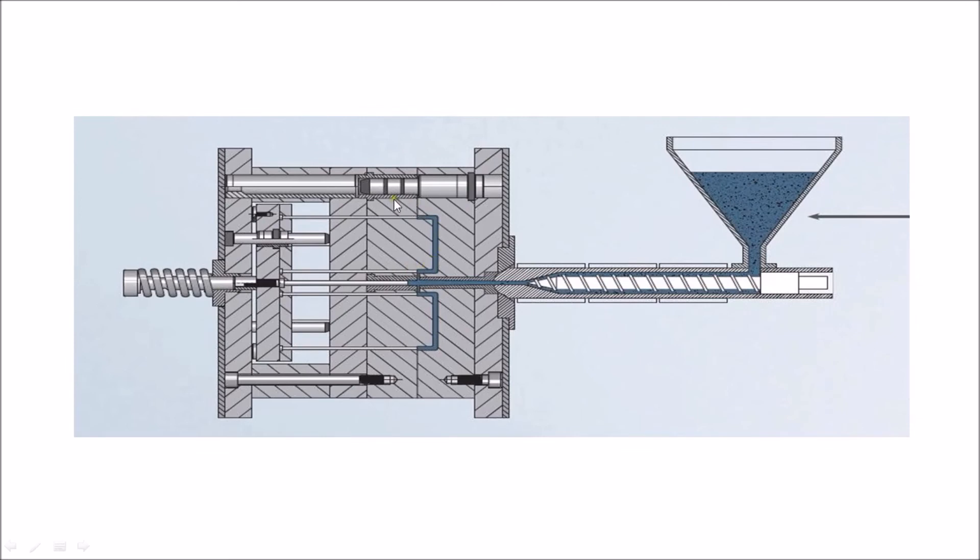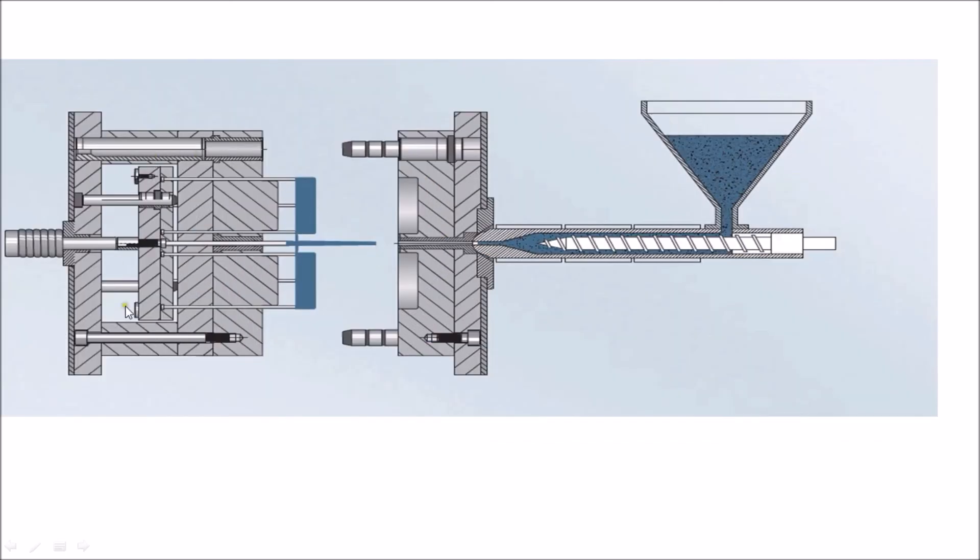After this part is solidified, it will be ejected through the ejector pins. Here you will get your part. This is the process of injection molding.